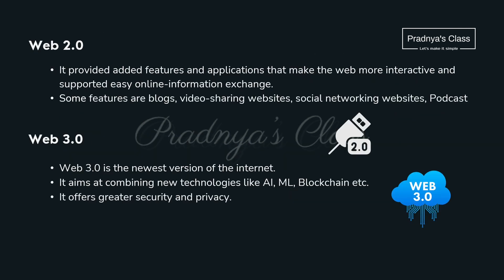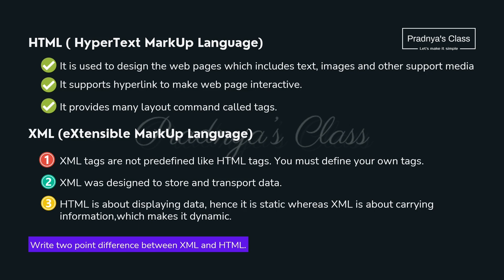Here are the different versions of the web. Now let's talk about the next important topic: HTML — Hypertext Markup Language. It is used to design web pages. We can include text, images, and other media. It has a fixed set of tags with the help of which we design web pages.